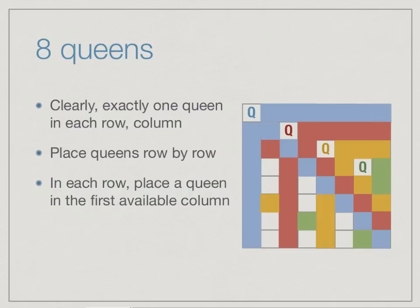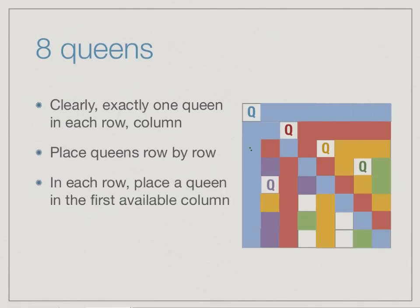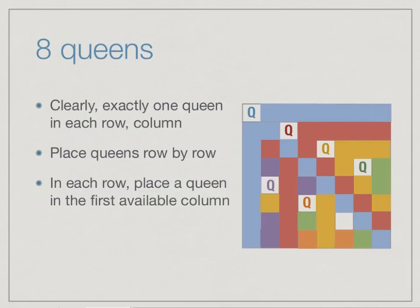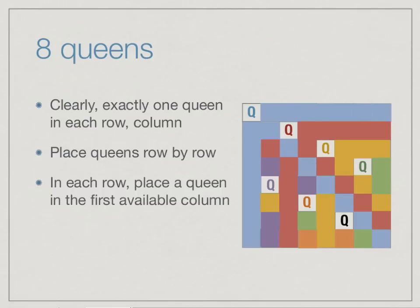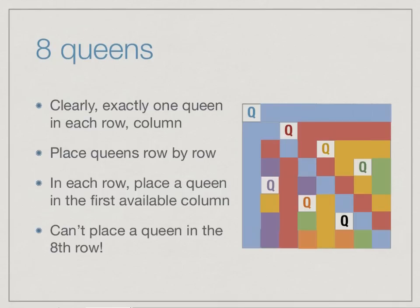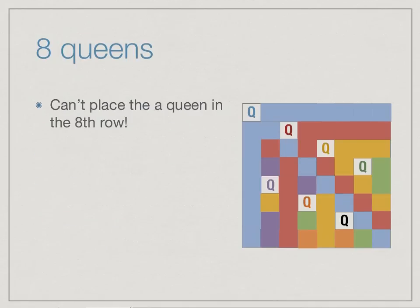We place a fourth queen, then a fifth, then a sixth, then a seventh. After placing the seventh queen, we find that all squares in the eighth row are blocked — there is no way to place the eighth queen. We have to do something about this, so we go back and change something we did before.